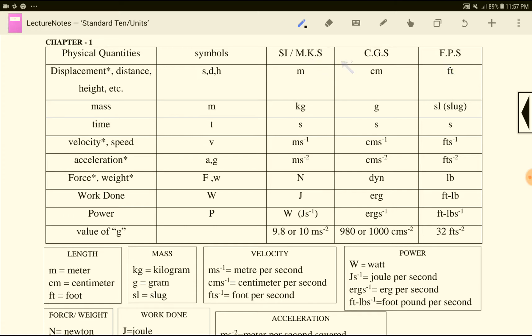This is the image on screen. All the CGS and FPS systems are open. For displacement - distance, height, line - the units are: MKS system uses meter, CGS system uses centimeter, FPS system uses foot. Now mass - mass is three systems: MKS is kilogram.